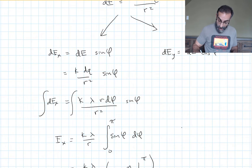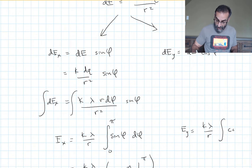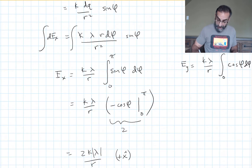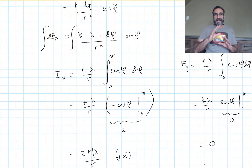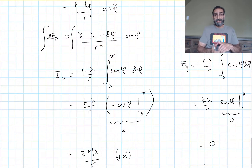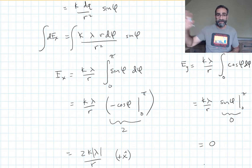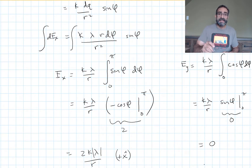For the y-direction using phi: Ey = (k·lambda/r)·∫cos(φ)·dφ from 0 to π, which gives sin(φ) from 0 to π = 0. It all works out the same if you get your limits correct. Define your angle, define how you're measuring it, find what range covers all the charge, and forget any old rule that zero must be the x-axis — make zero whatever makes sense for the problem.